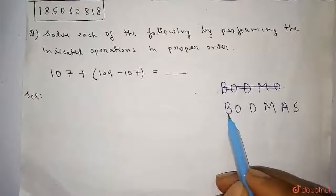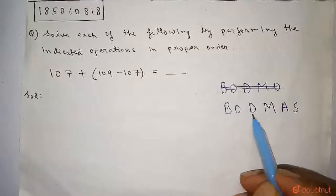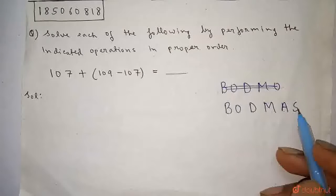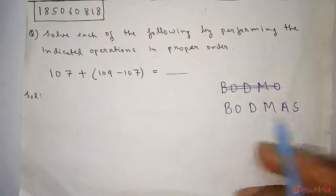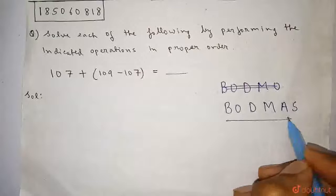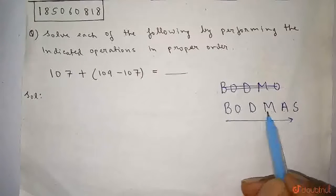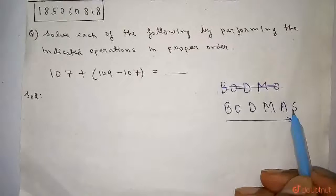Where B stands for bracket, O for order, D for division, M for multiplication, A for addition and S for subtraction. And you need to operate the operations in this manner. At first you need to operate bracket, then order, then division, then multiplication, then addition, then subtraction.